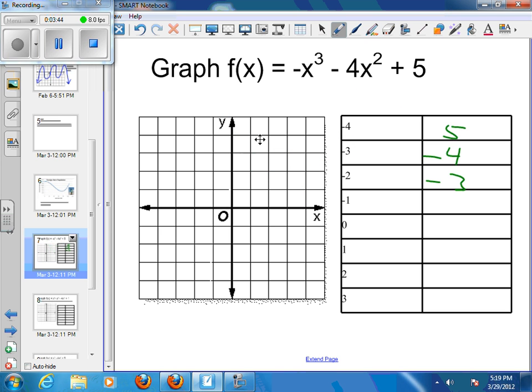And then I'm going to fill in my negative 1. So that's negative negative 1 cubed minus 4 times negative 1 squared plus 5. So this first part is a positive 1, and then I'm going to have a minus 4 plus 5. So that's going to be a 1 plus 5 is 6 minus 4, so that's a positive 2 at that point.